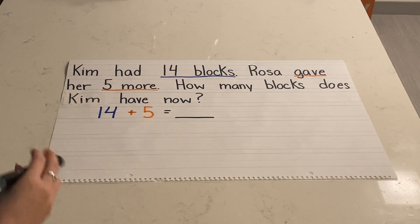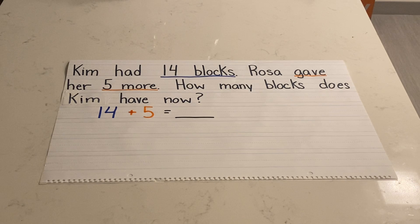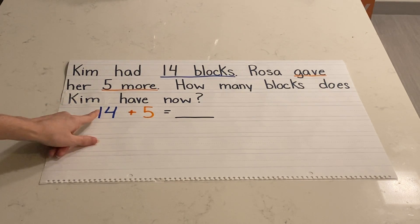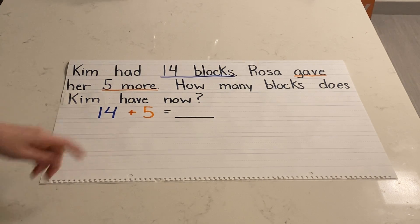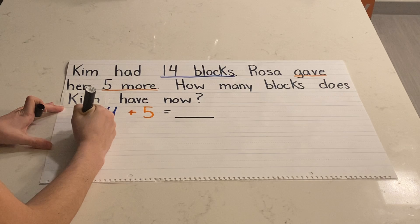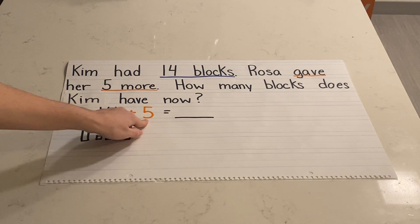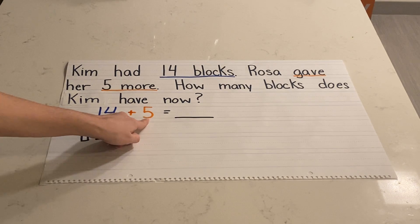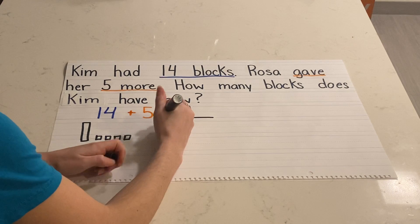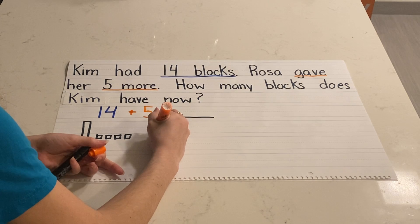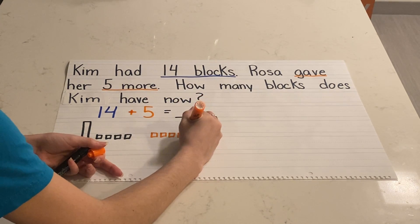Now that I have my number sentence, I can choose a strategy to help me solve. The strategy I'm going to choose is drawing a picture using tens and ones. I'll start with the number 14. 14 has one group of 10 and four extra ones, so I will draw that — one group of 10 and four extra ones. And now I need to add five more. It's not five more tens, just five more ones. So let's do five more ones: one, two, three, four, five.